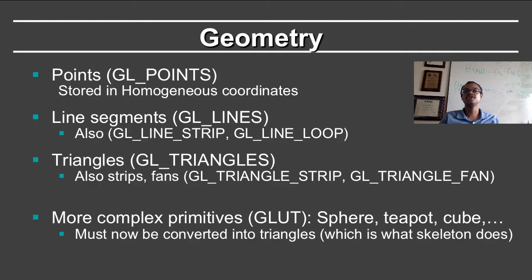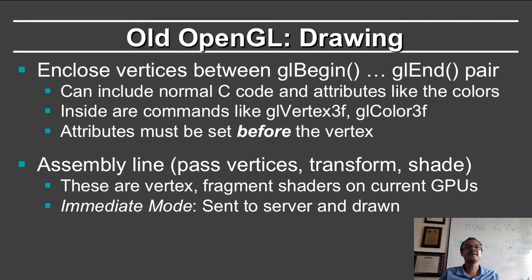To reiterate, the points are GL points stored in homogeneous coordinates, line segments, triangles which is the most important, GL triangles. You also have strips and fans. More complex primitives used to be available in GLUT, in particular spheres, teapots, and cubes. These must now be converted into triangles. The skeleton code we are providing does do this conversion and we do not use the deprecated GLUT sphere, GLUT cubed, or GLUT teapot commands anymore.